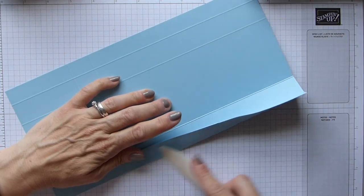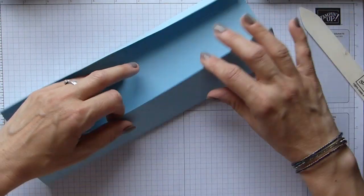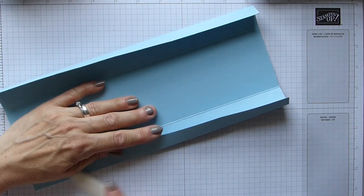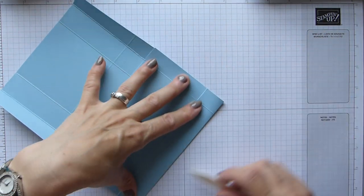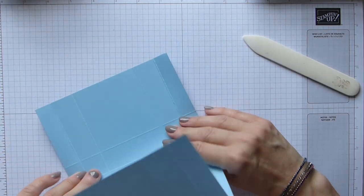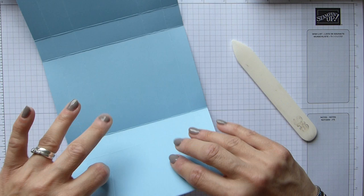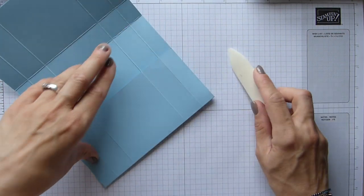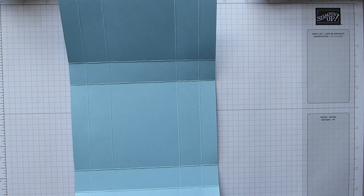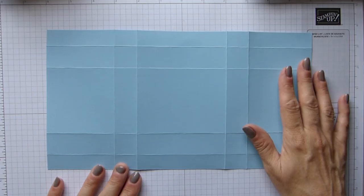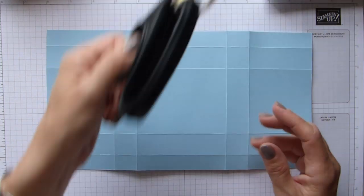Now we're going to fold and burnish our score lines. I'm using balmy blue; the previous one was mossy meadow, and the so saffron is the same as the vellum.